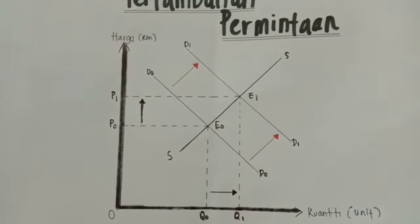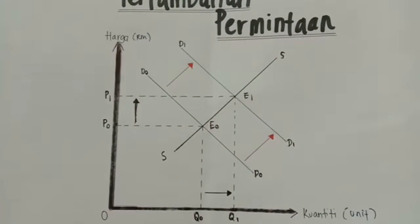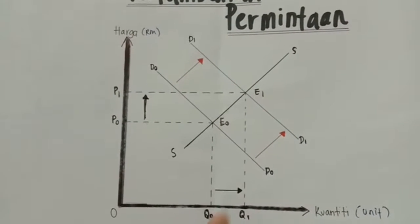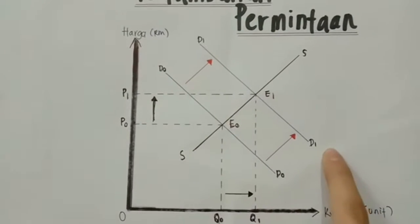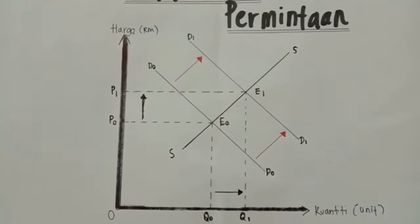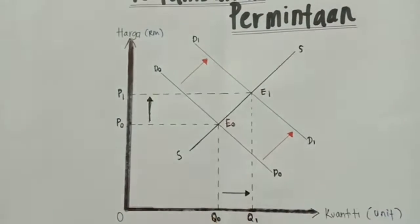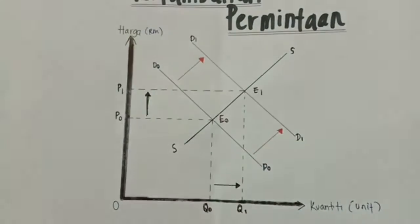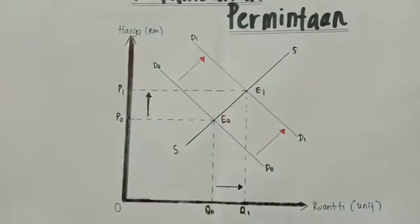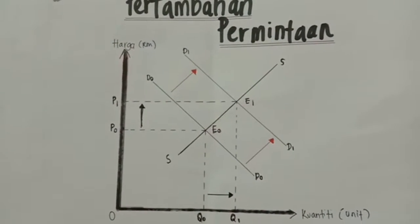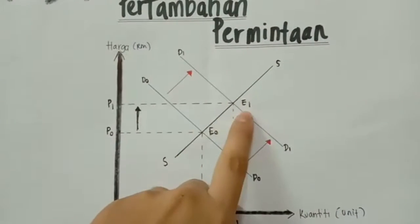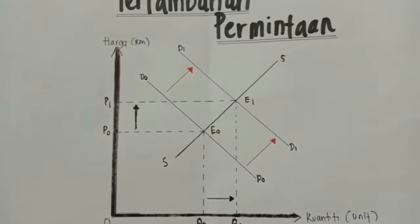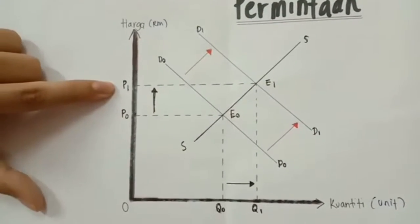Apabila permintaan bertambah, keluk permintaan D1 akan beralih ke kanan dari D0 ke D1. Keluk permintaan D1 yang baru bersilang dengan keluk penawaran SS pada titik E1. Keseimbangan pasaran yang baru tercapai pada titik E1 dan harga keseimbangan pasaran meningkat dari P0 ke P1.